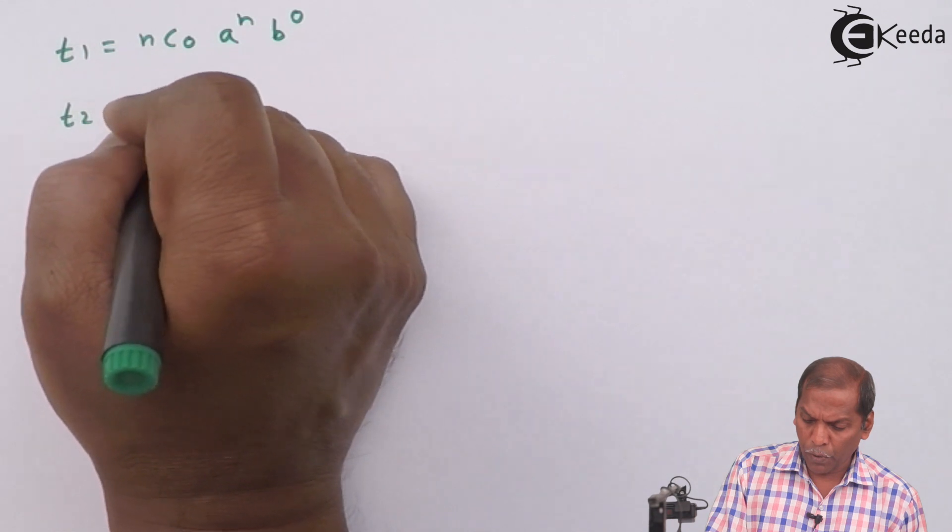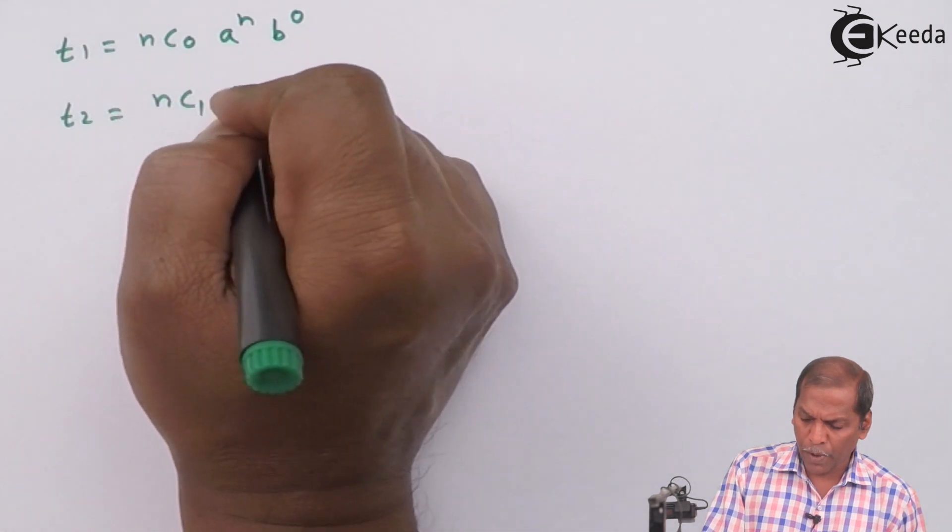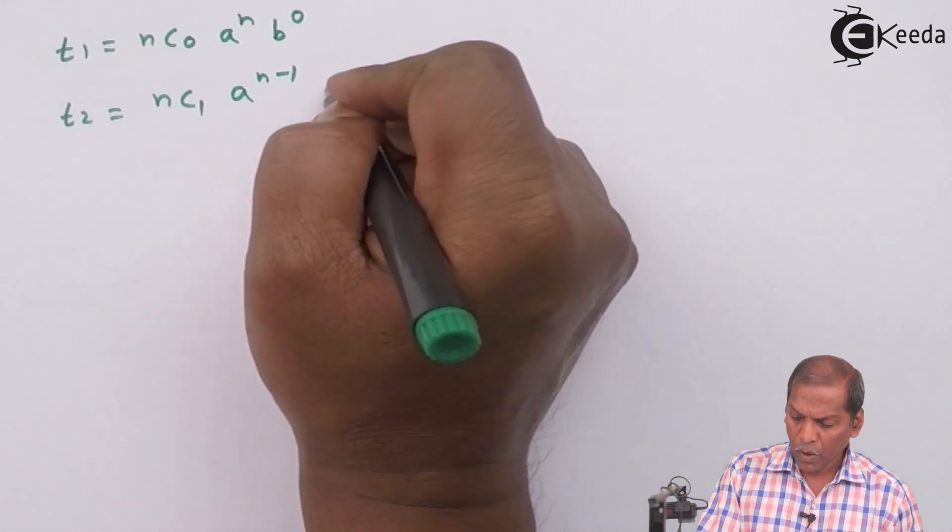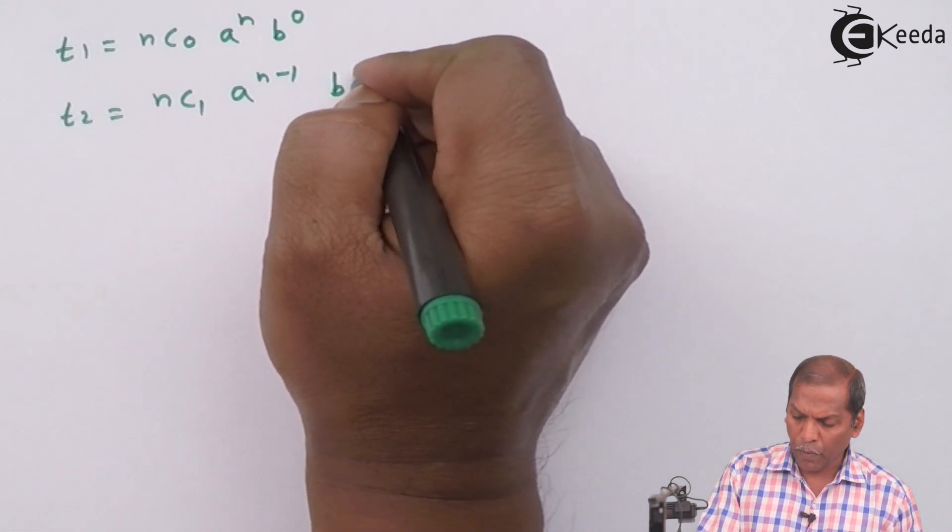For T2, we write nC1 A to the power n minus 1 B to the power 1.